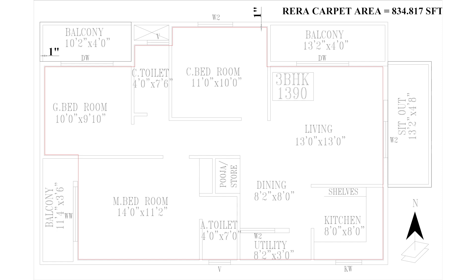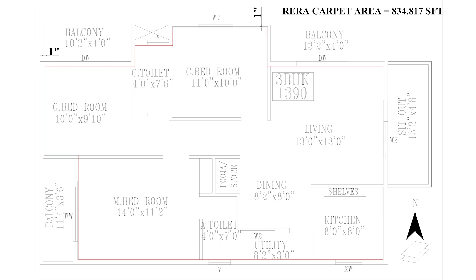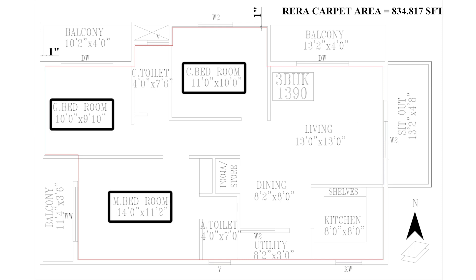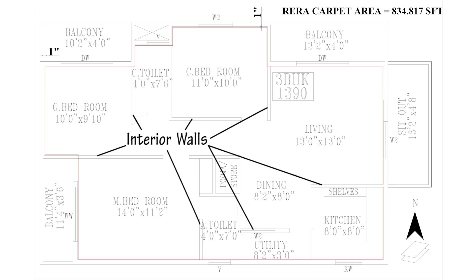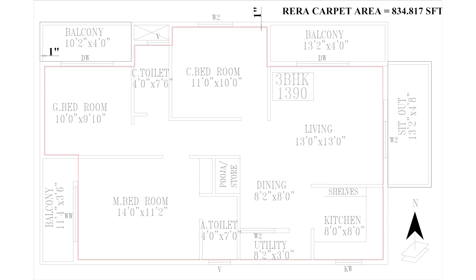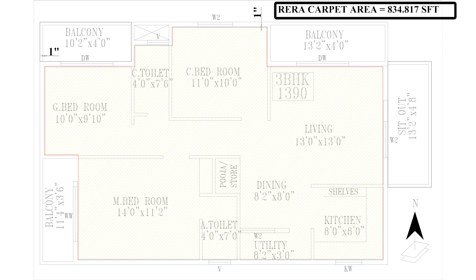We have an example right in front of us — a plan of a 3BHK flat. To get the carpet area, we leave a gap of around one inch from the external wall. As you see on the screen, the red colored line indicates the boundary of the carpet area. Carpet area includes all rooms in the flat — bedrooms, toilets, hall, kitchen, utility, etc. — as well as the inner walls.